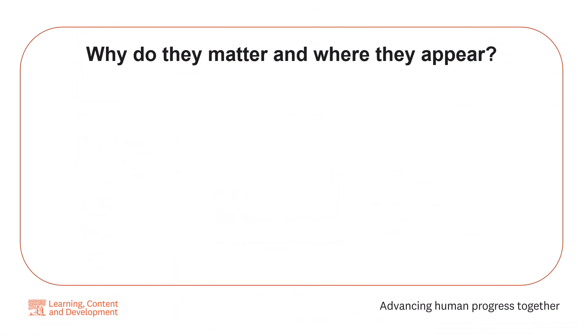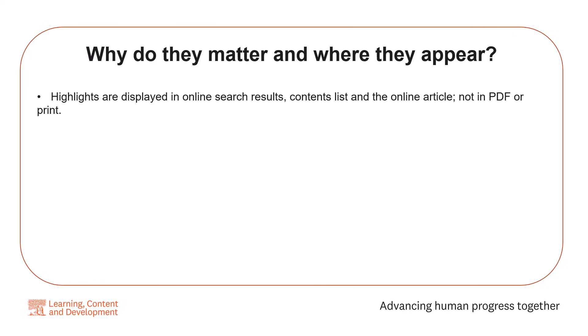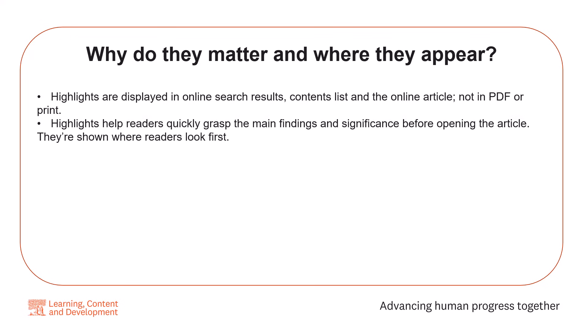Why do they matter and where do they appear? Highlights are displayed in online search results, contents lists, and the online article — not in PDF or print. Highlights help readers quickly grasp the main findings and significance before opening the article. They're shown where readers look first.